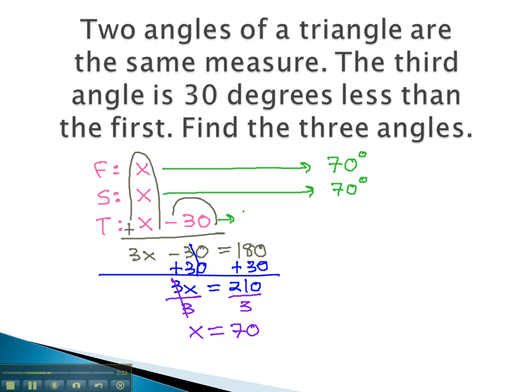The third angle is x, or 70, minus 30. 70 minus 30 is 40 degrees. These are the three angles, where the first angle and the second are the same, and the third is 30 degrees less than the first.